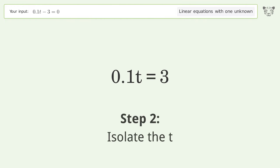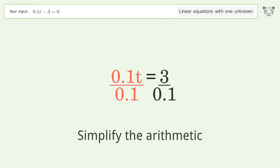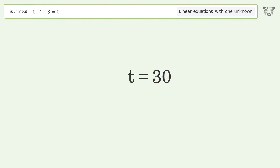Isolate t by dividing both sides by 0.1, then simplify the arithmetic. And so the final result is t equals 30.